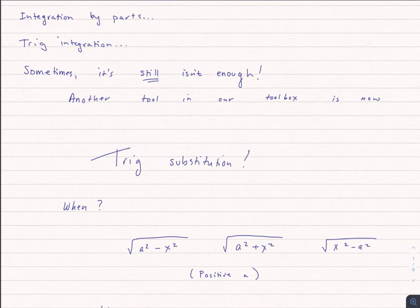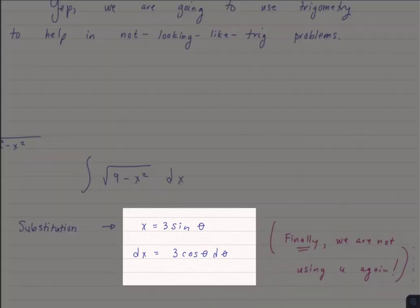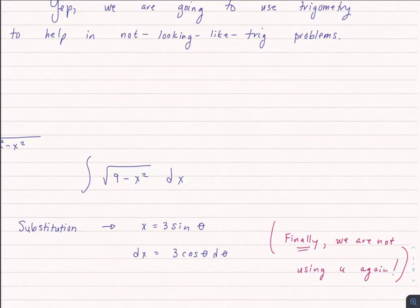Let's start with the square root of a squared minus x squared. We'll use an example with a equals 3, so a squared is 9. I'm going to do a trig substitution — instead of using the variable x, I'm going to start using the variable theta. Specifically, I'm going to say x equals 3 sine of theta. And then dx would be 3 cosine theta d theta.